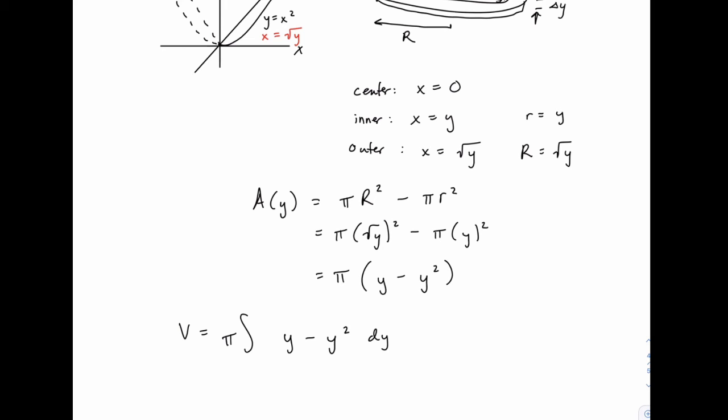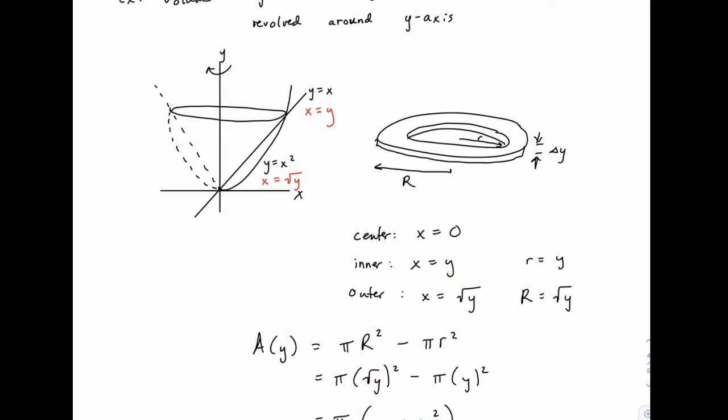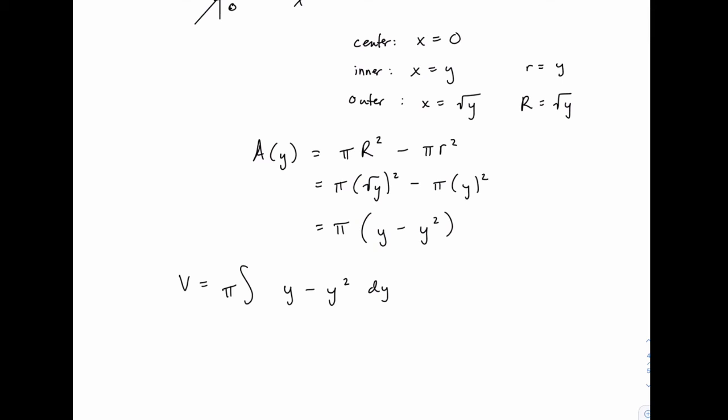The last thing we need is the limits of integration, meaning the y values at the bottom and the top of this figure. The bottom is easy, because these two intersect when y equals 0. And the top also isn't too hard, we just have to figure out the y value when y equals x and y equals x squared intersect, which you can do by setting them equal to each other and solving. But we've already done this, and we found that it was equal to 1. So I'll skip the work to find that, but in general you would set the two functions equal and solve the equation that results.